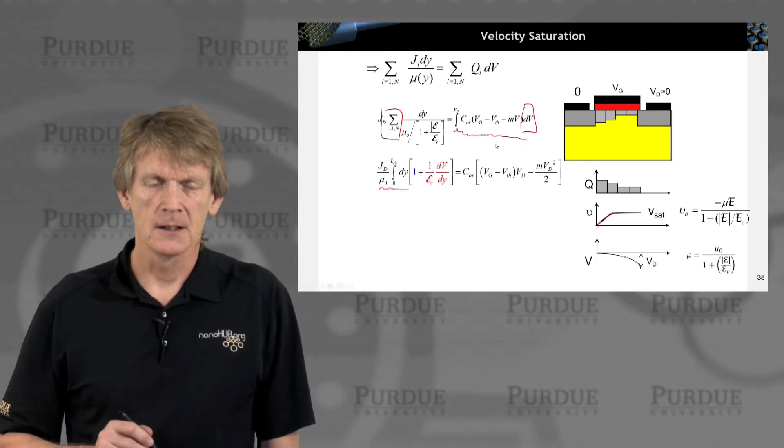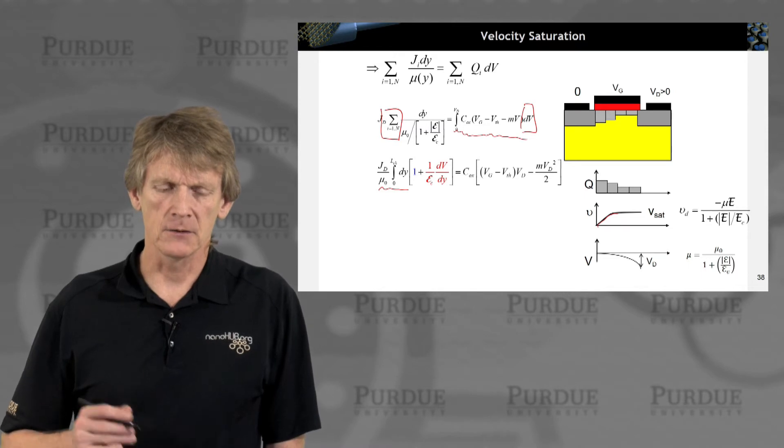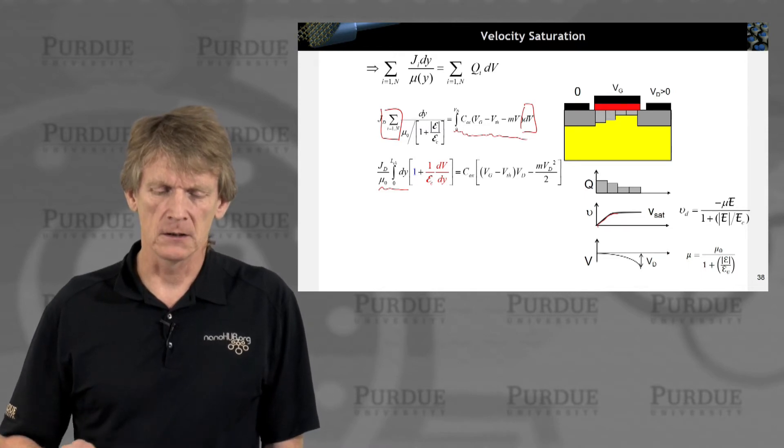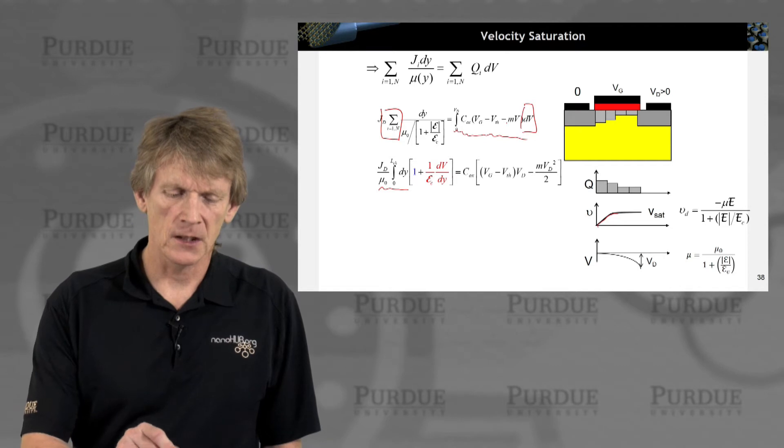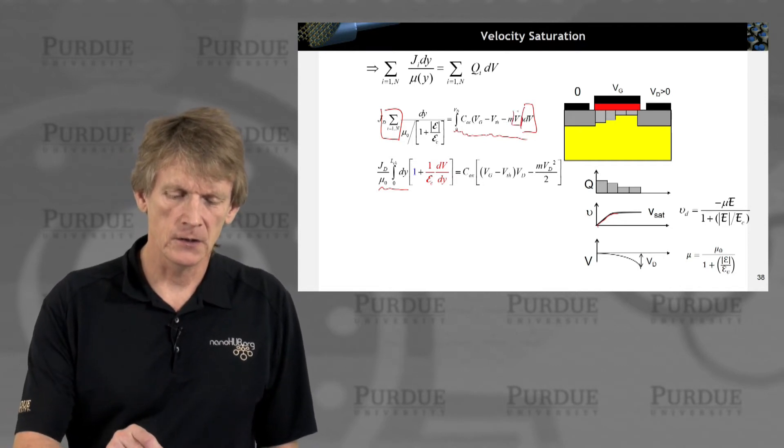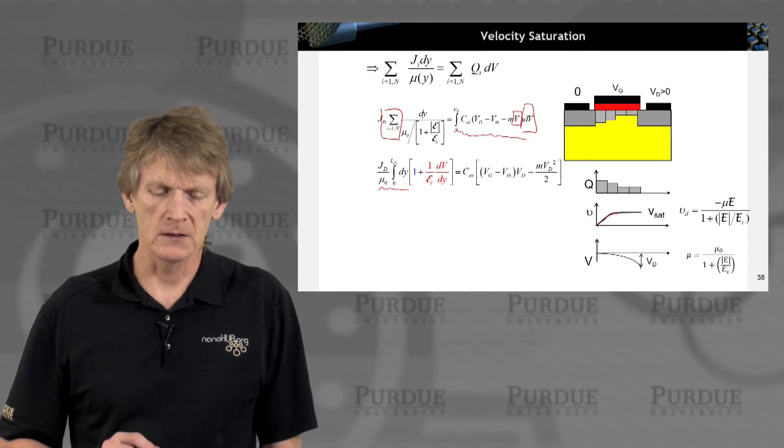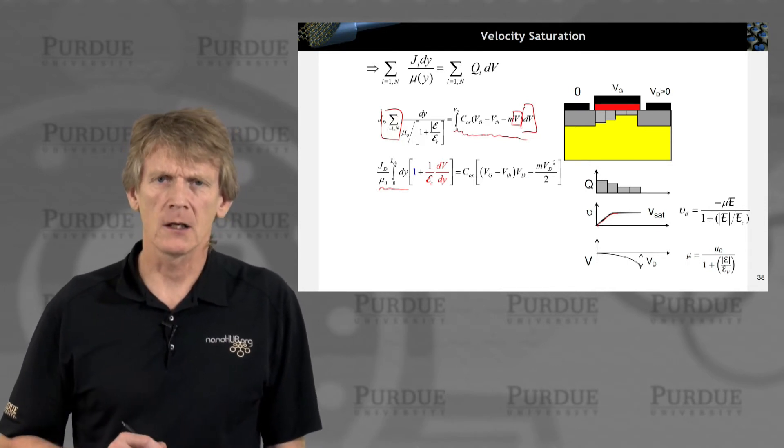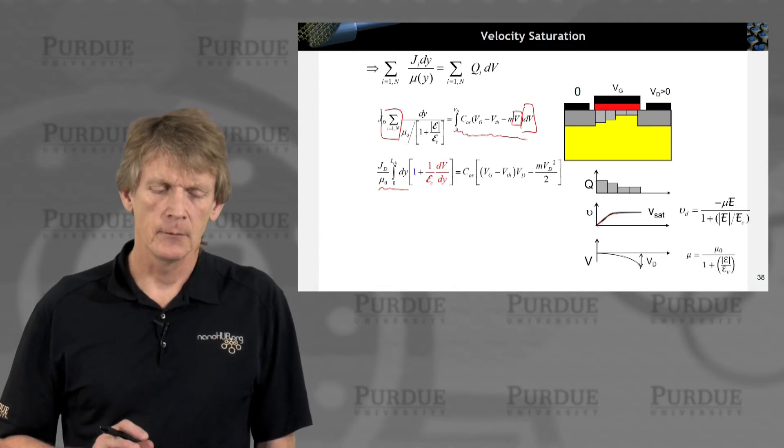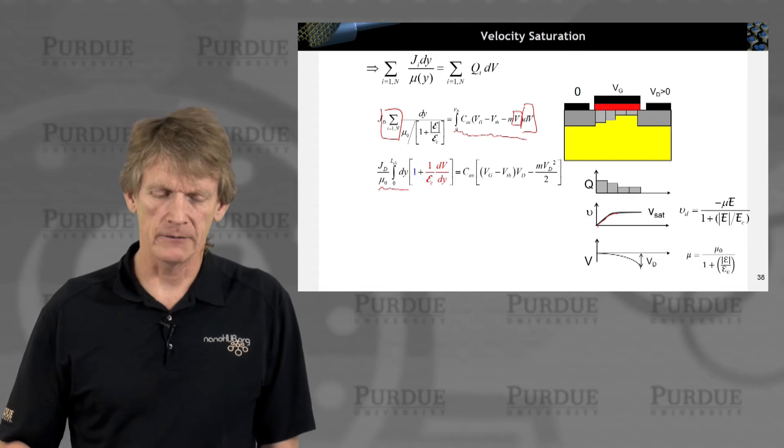And just as what we've done before, we integrate here over the distribution of the potential due to the drain voltage along the channel. Again, this integral here we can do, it is linear in voltage, so it turns into linear in square. We integrate it up from 0 to Vd. That's again the square law we had seen before. But now we have the mobility built into the integral on the left-hand side.